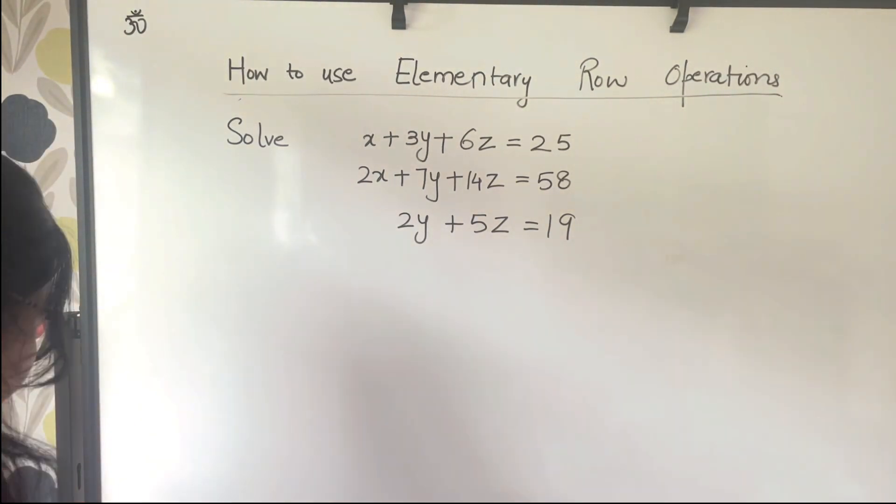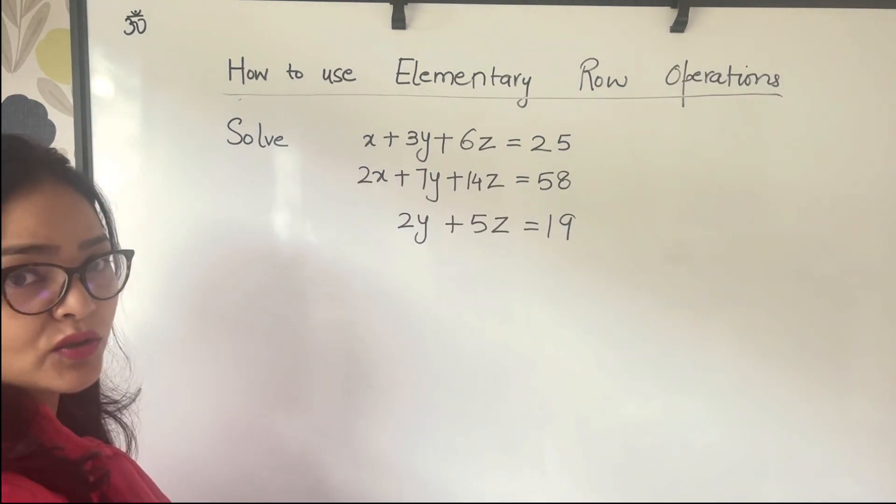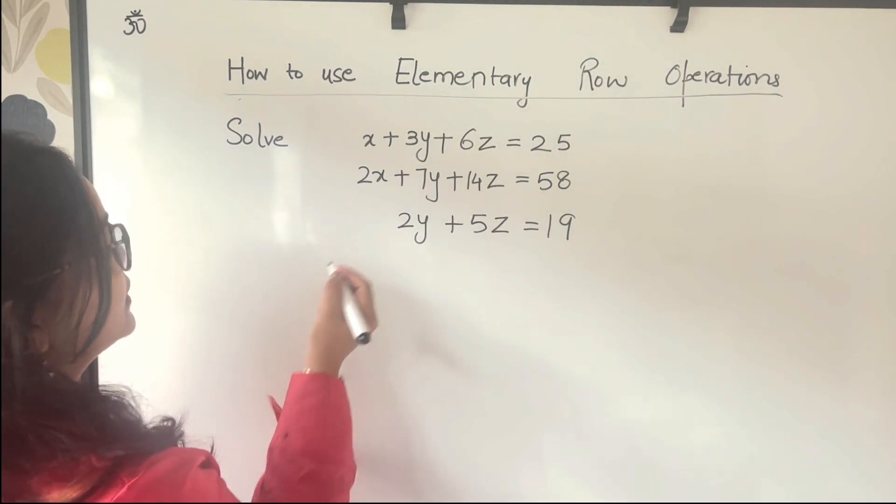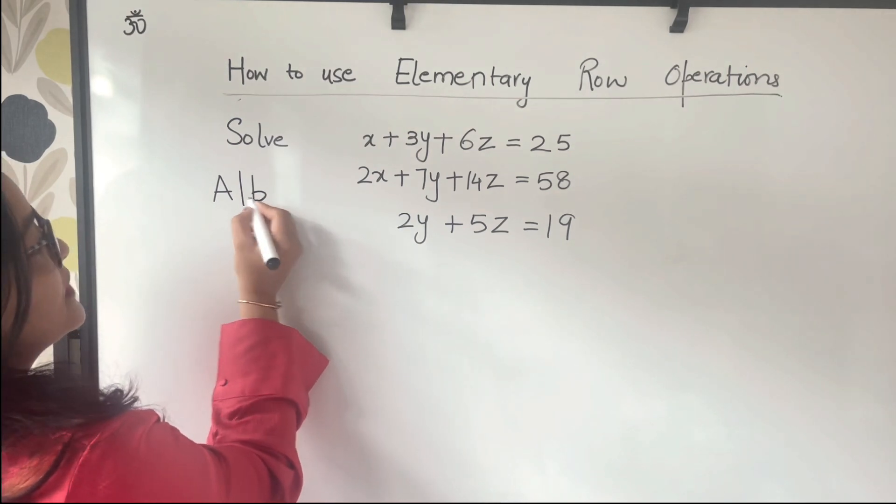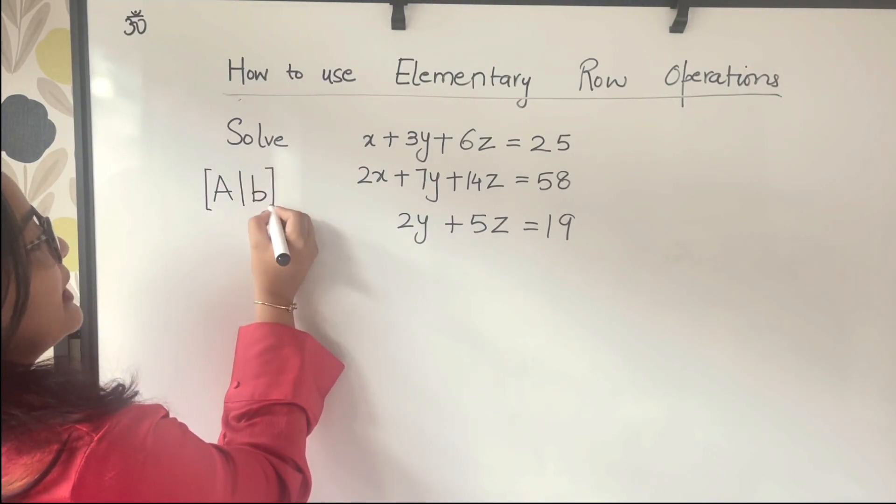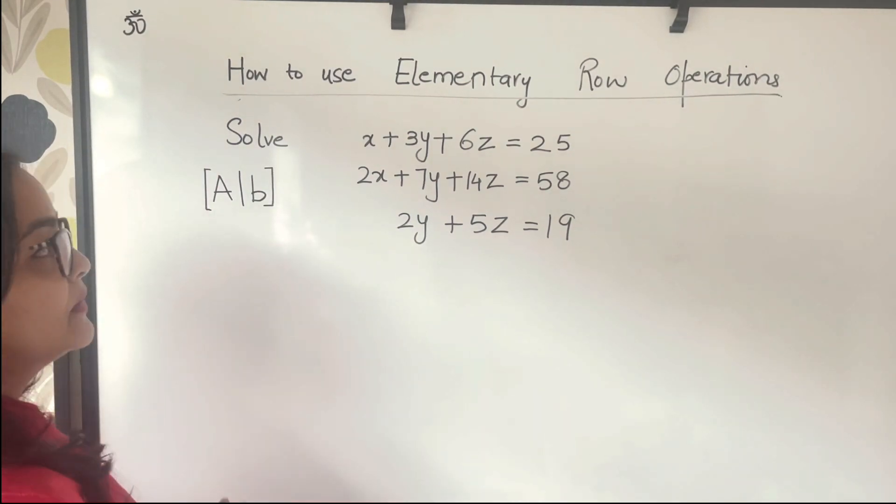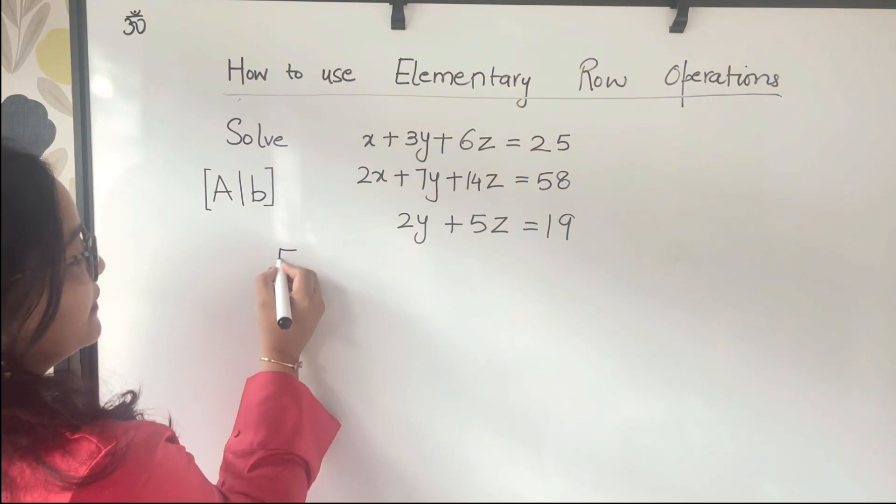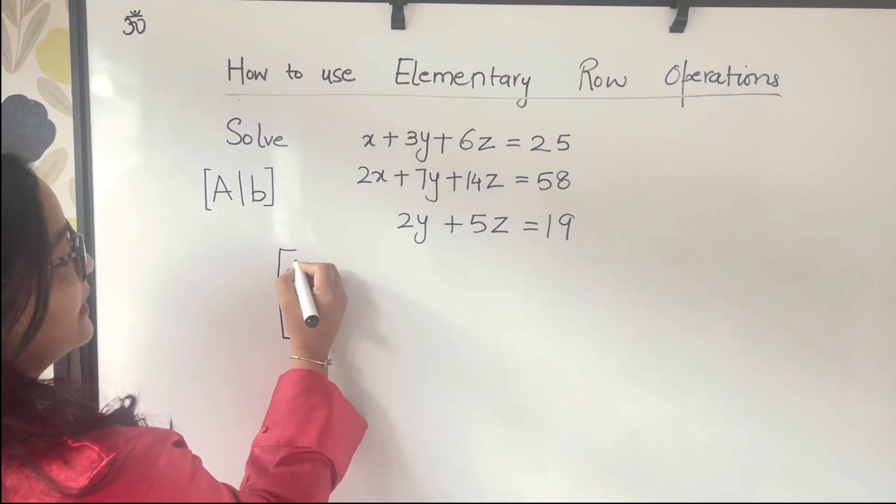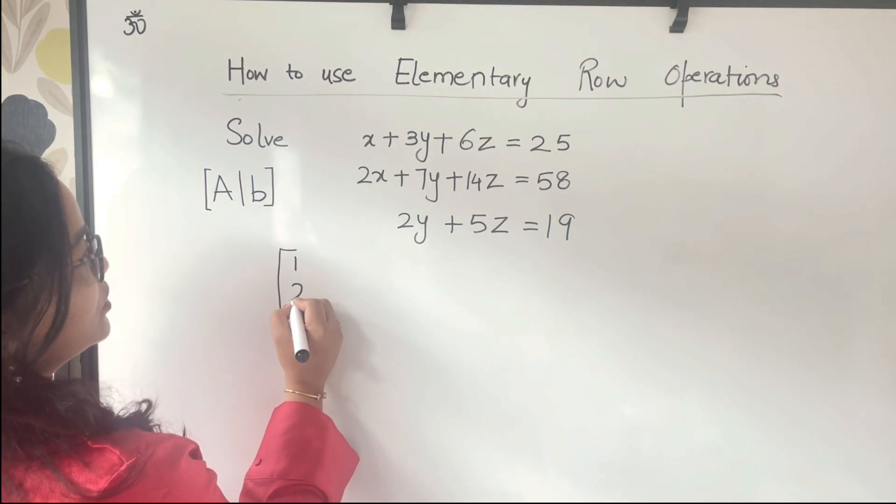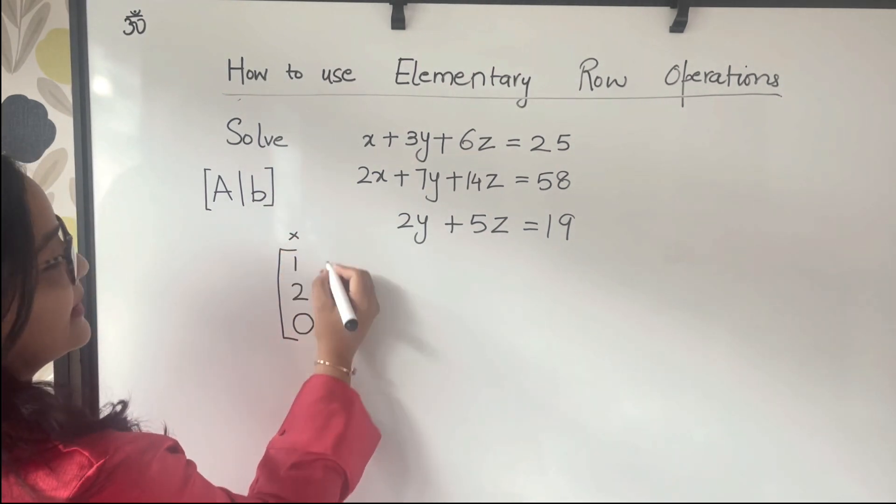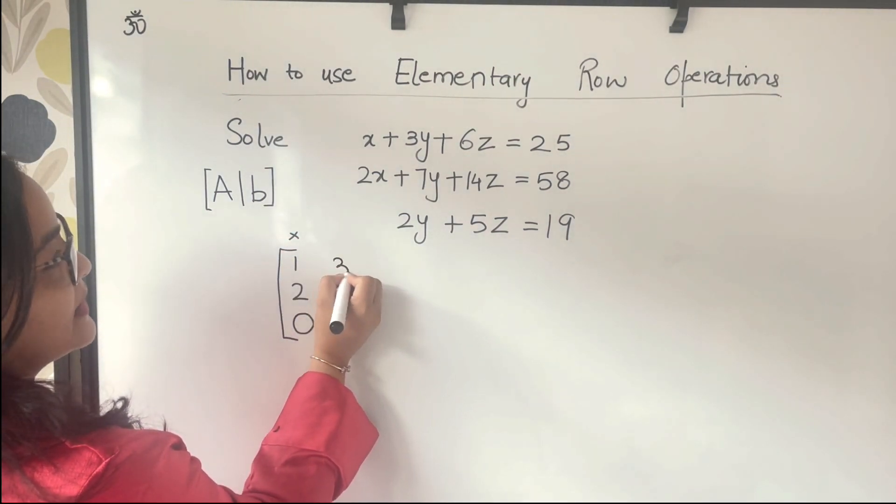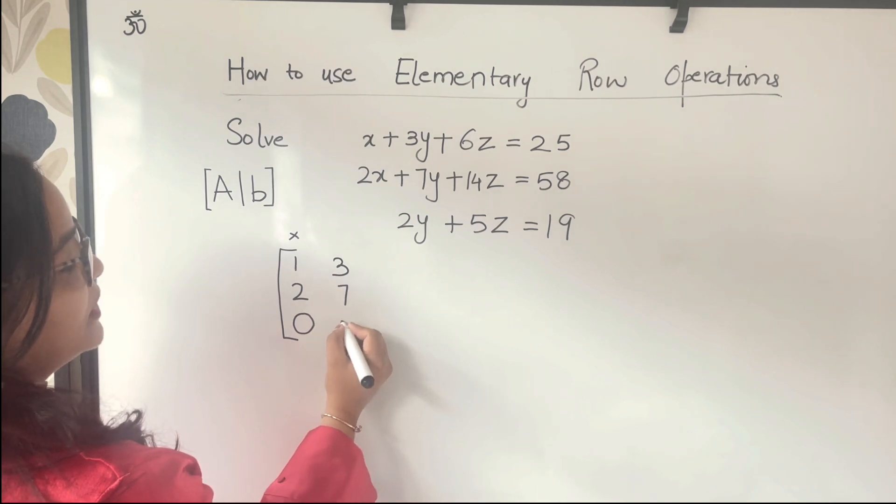The first thing: convert the system of equations into matrix formulation. So matrix formulation for any system of equations is the augmented system that looks like this. What we have is 1, 2, 0 for x. What we have here is 3, 7, 2, the coefficients of y.